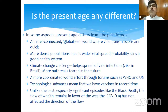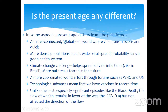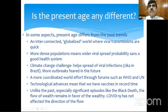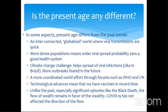Technological advances have enabled vaccine development in record time — this has never happened before in history. Unlike the past, especially significant episodes like the Black Death, the redistribution of wealth from top to bottom is not happening now. The evidence suggests wealth redistribution is not occurring, which is concerning and means governments would need to play an added role. Thank you, this is it for the presentation.